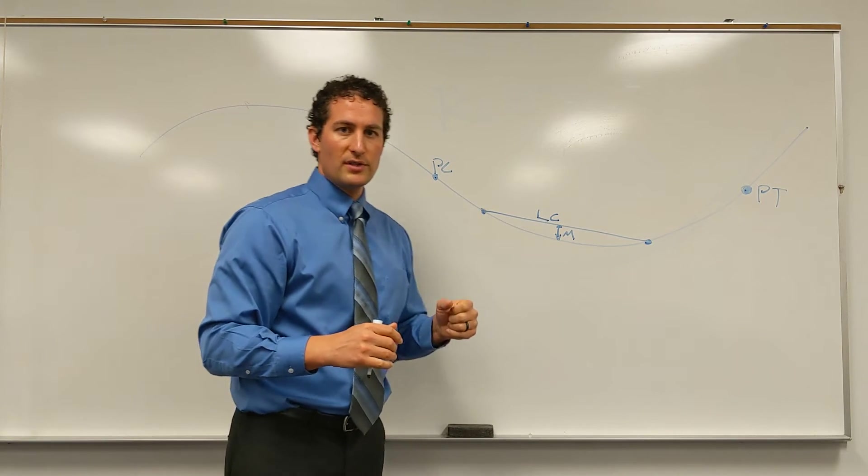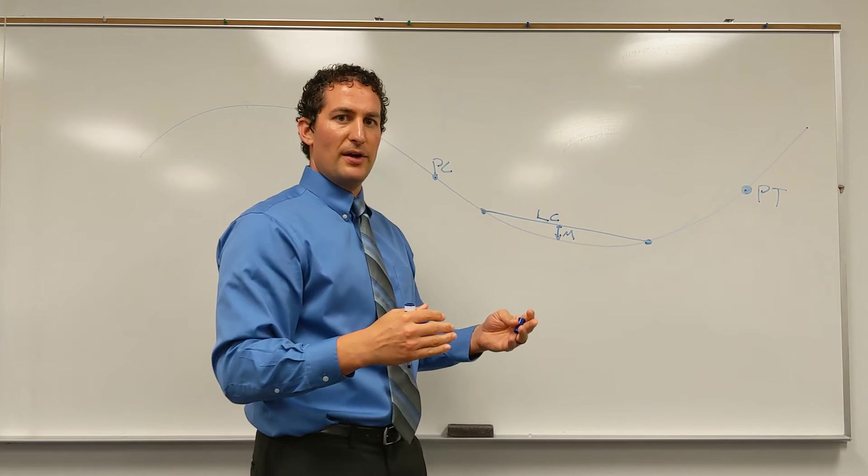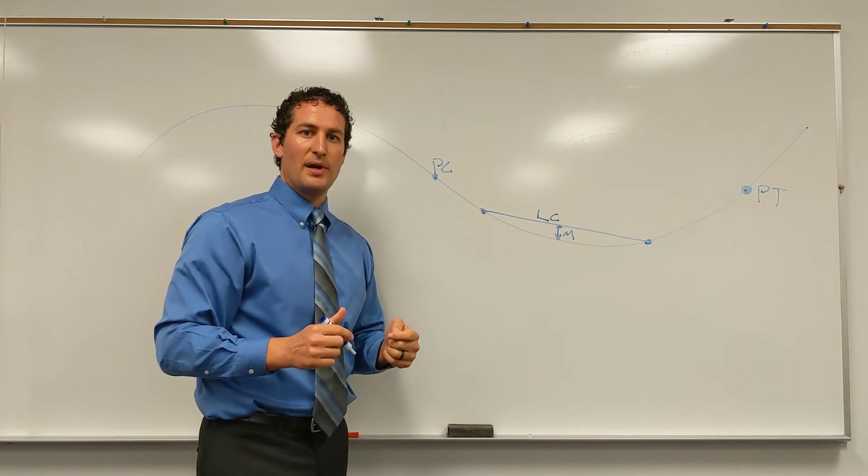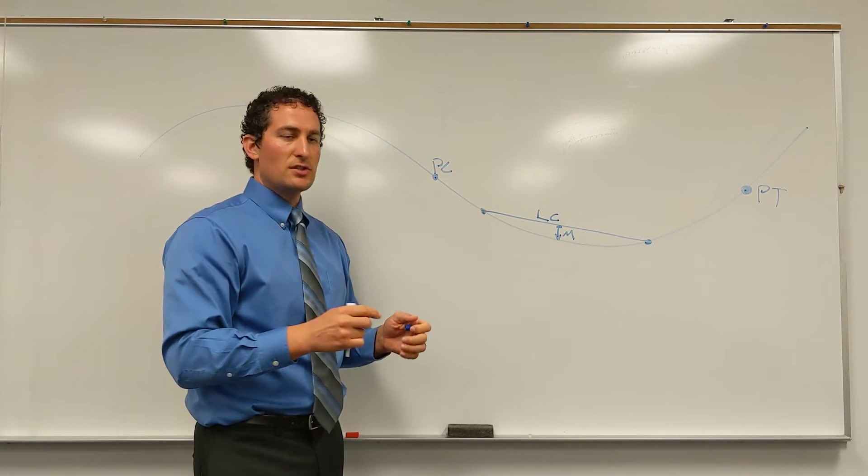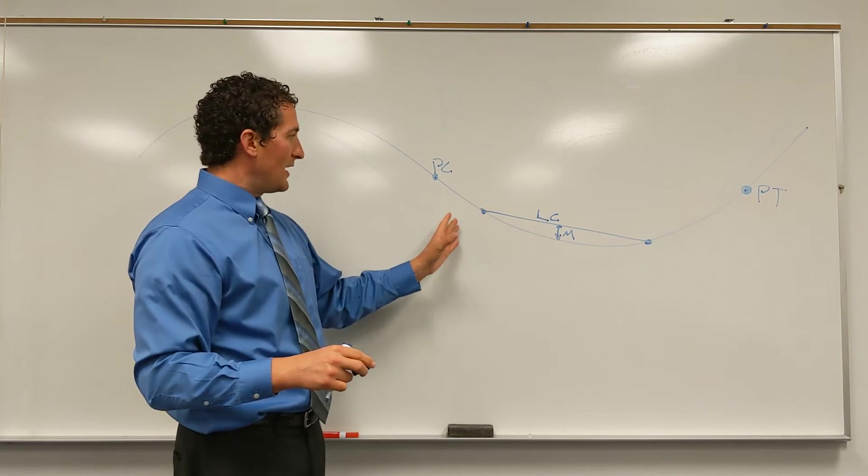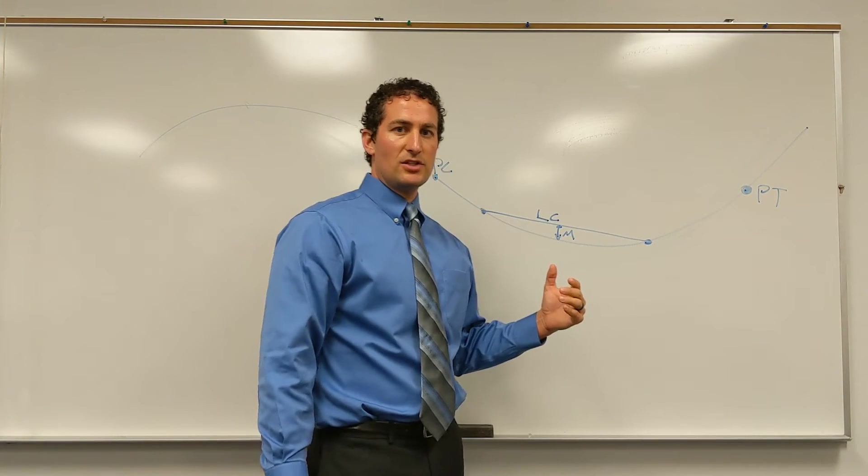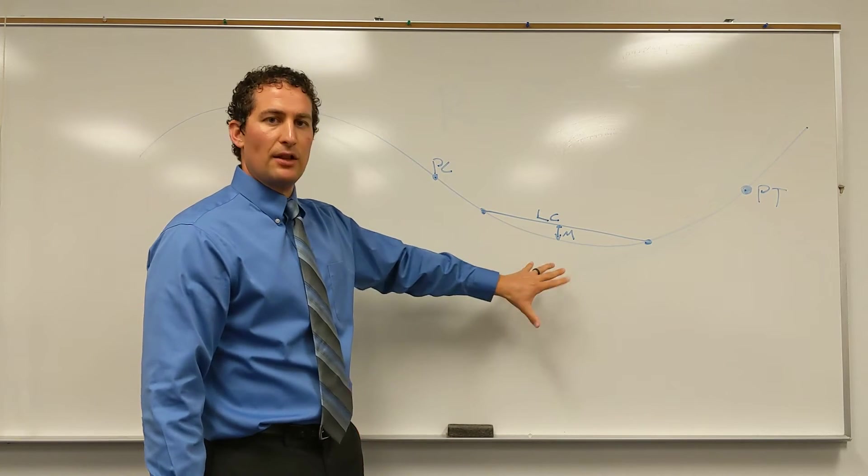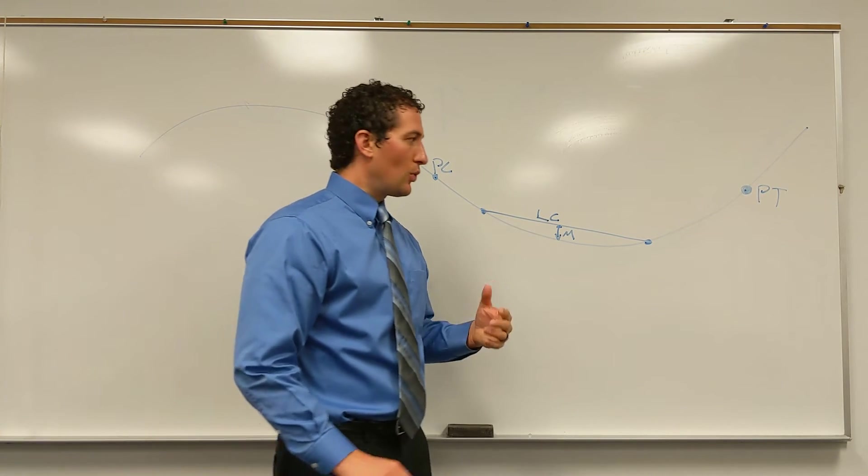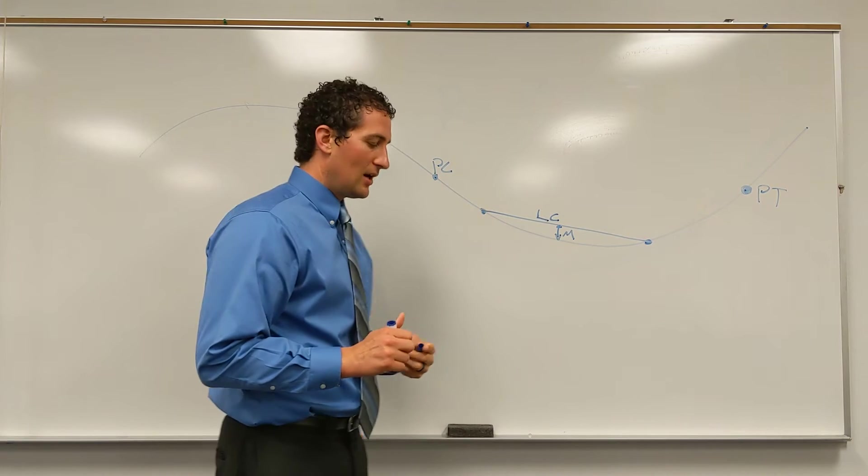You can also do multiple chords if you want to try to get a better estimate of the radius and see if it changes. If there's a spiral curve, as you get closer to the PC or the PT, you're going to see that radius change. So you may want to stay closer to the center of the curve as you work on estimating the radius.